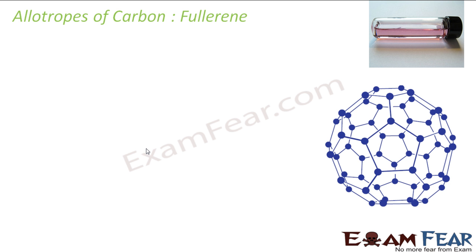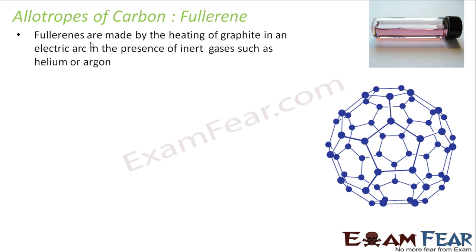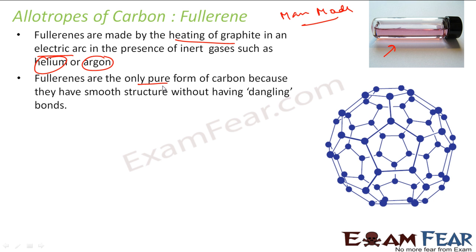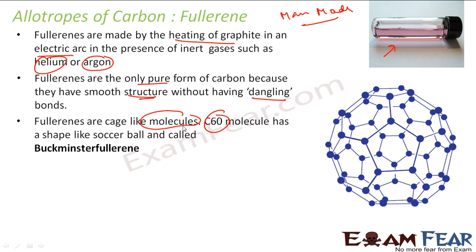Let us talk about the third allotrope — fullerene. Fullerene is made by heating graphite in an electric arc in the presence of an inert gas like helium. It is man-made and not naturally occurring. We recently discovered this allotrope. It has a soccer ball-like shape and is the only pure form because it has a smooth structure without any dangling bonds. The C60 molecule is shaped like a soccer ball and is called Buckminsterfullerene, named after an architect who designed a building with a similar shape.